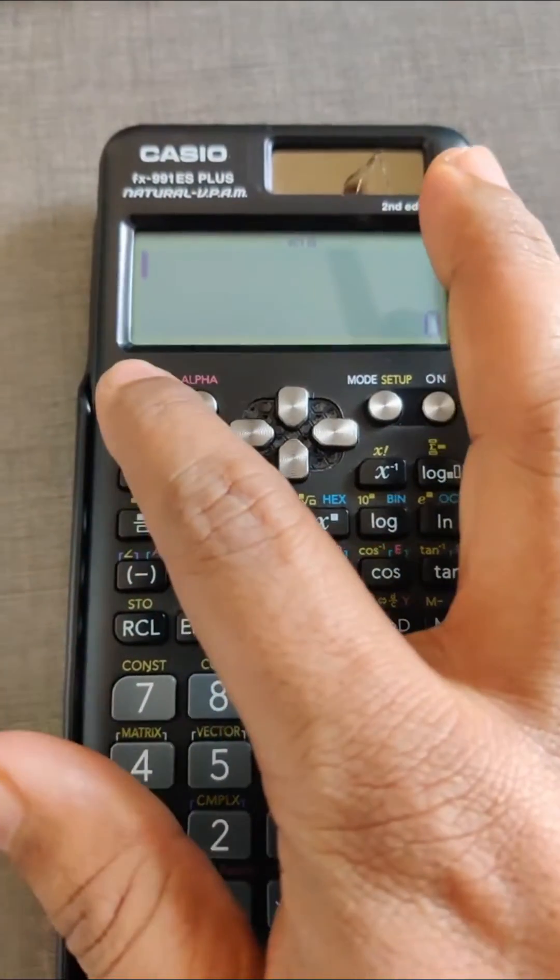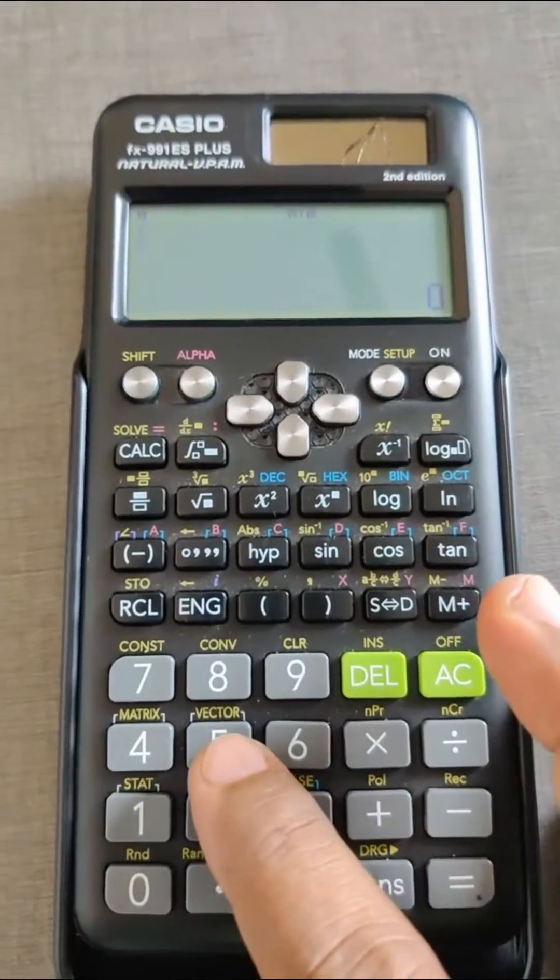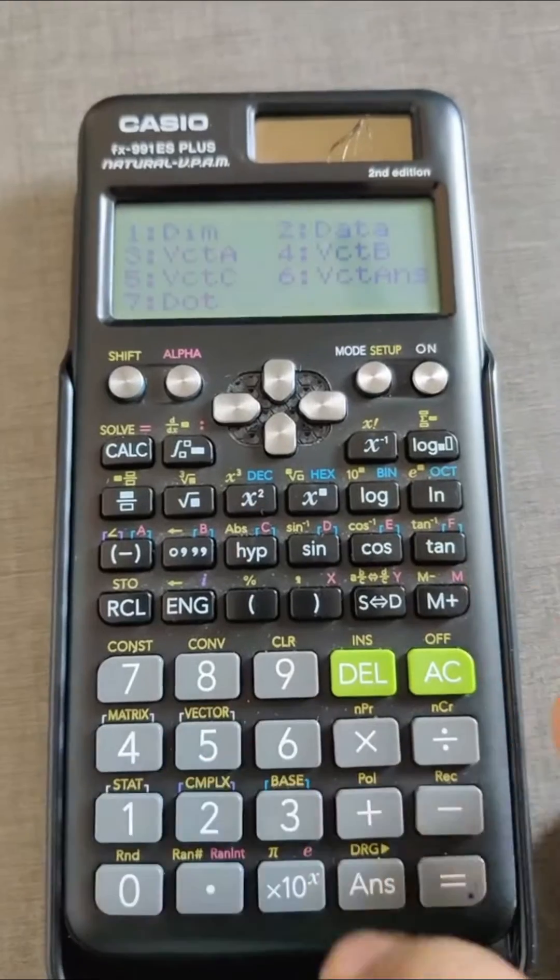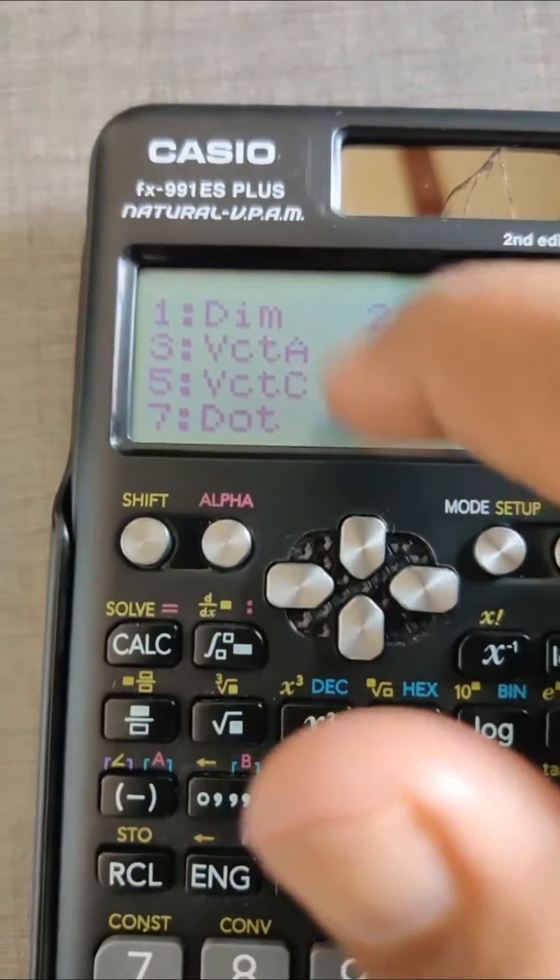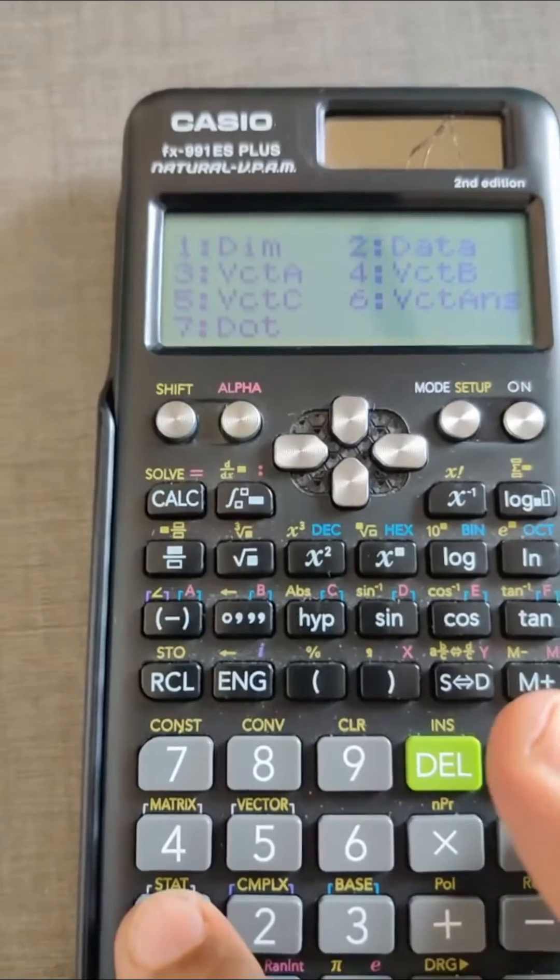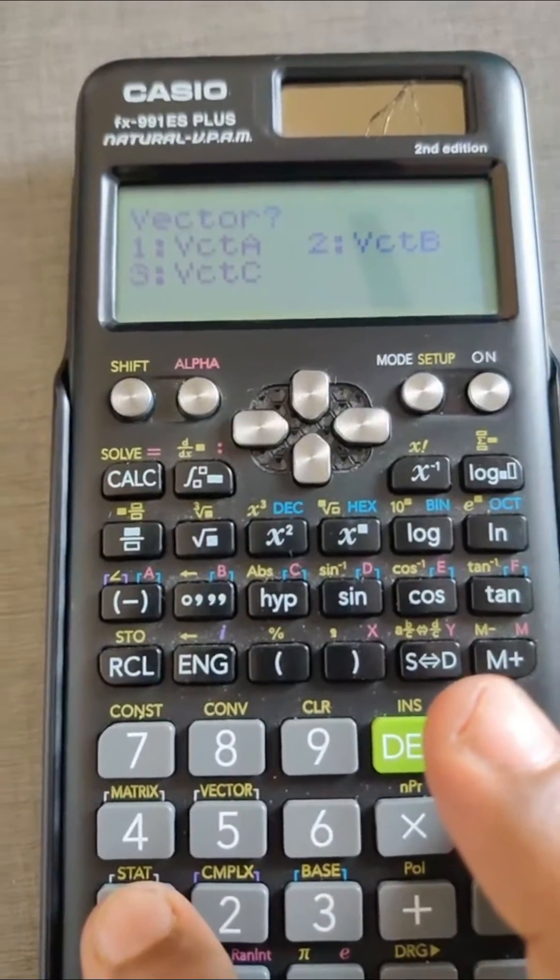To enter the next vector, press the shift button, then see - the fifth option is for vector. Press this option. Now we are going to enter the values, so the first option should be selected for entering the vector.